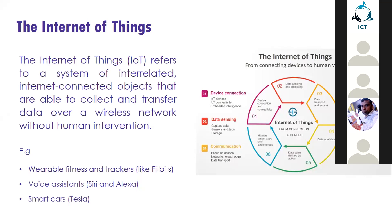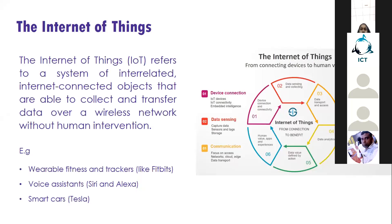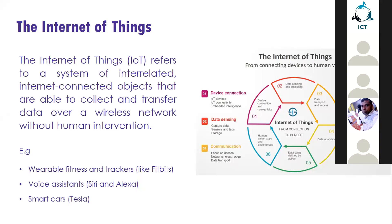The Internet of Things refers to a system of interrelated, interconnected objects that are able to collect and transfer data over a wireless network without human intervention. I'll be breaking this down and trying to explain as much as possible. When thinking about IoT, it's easier to explain with examples, such as wearable fitness trackers like Fitbits, which are common these days.